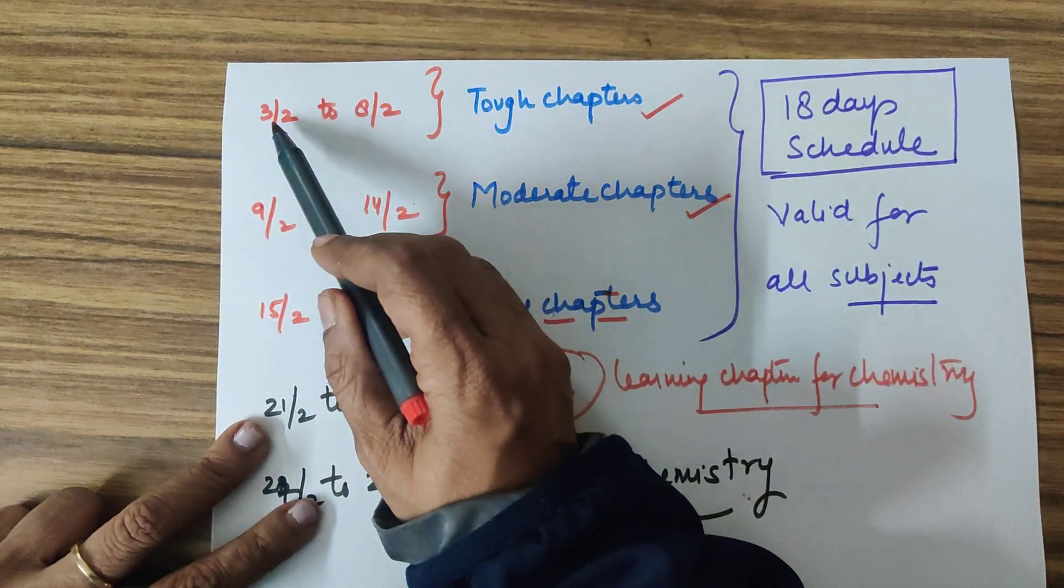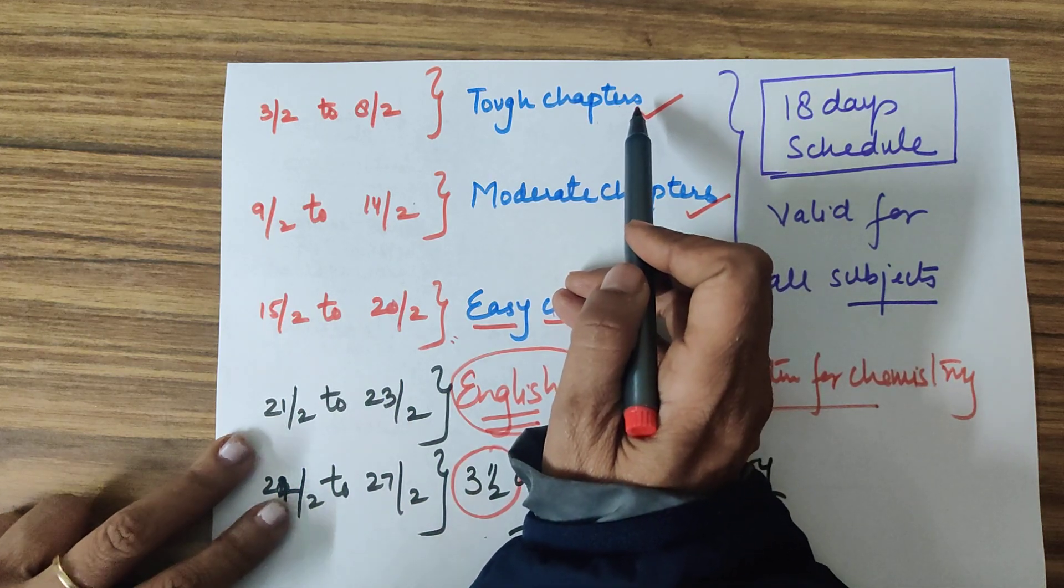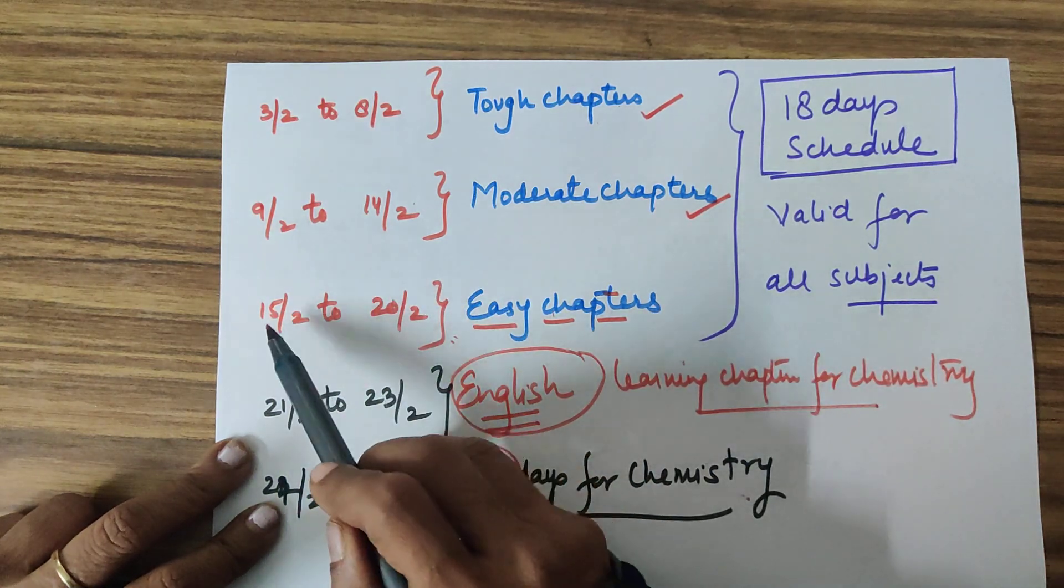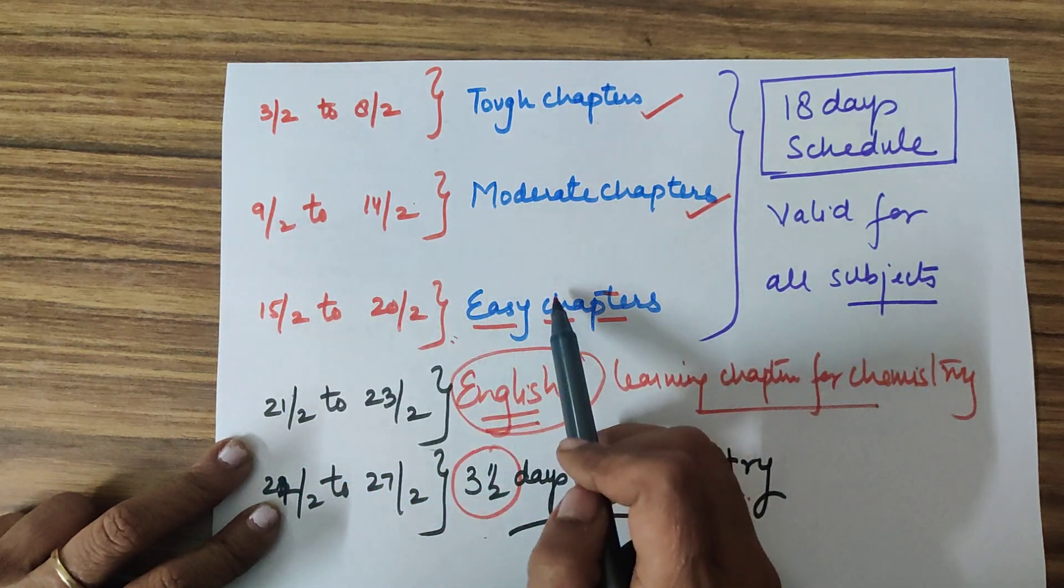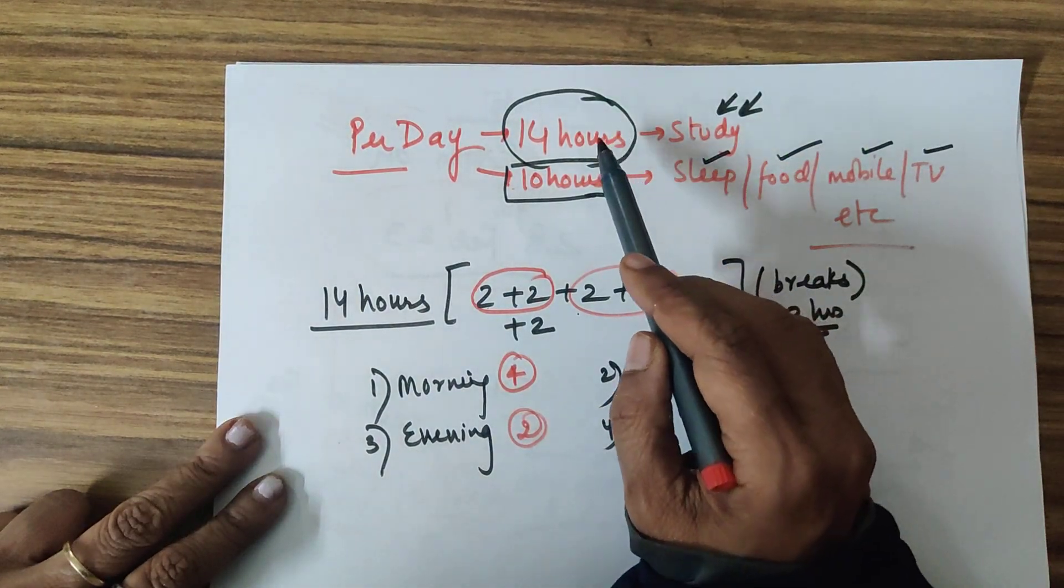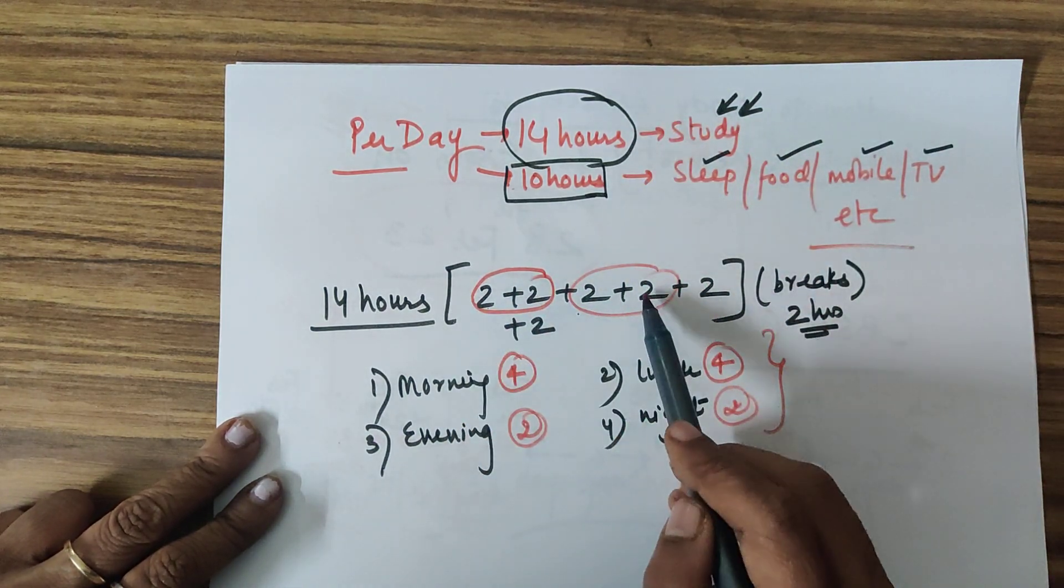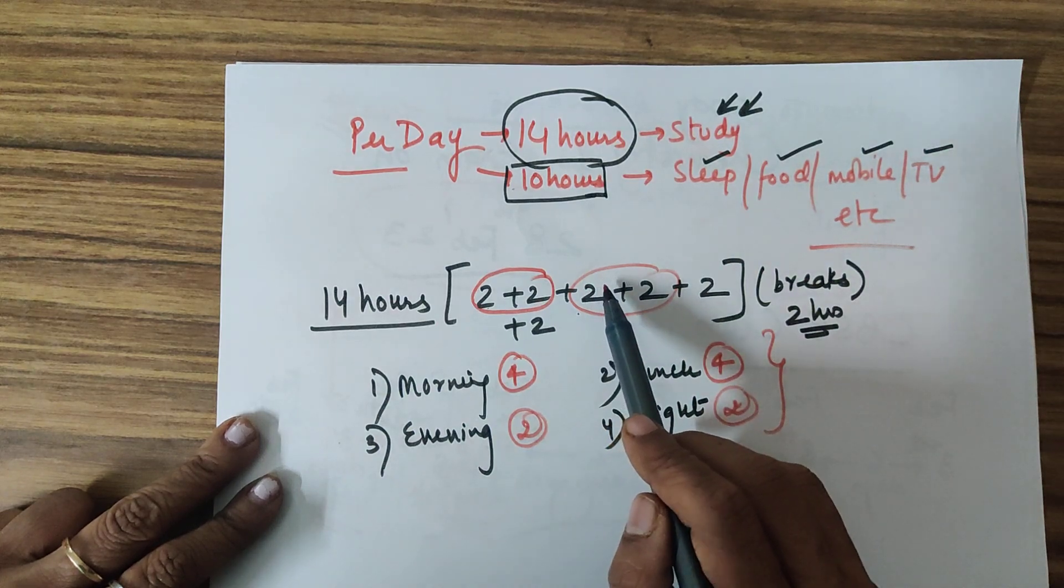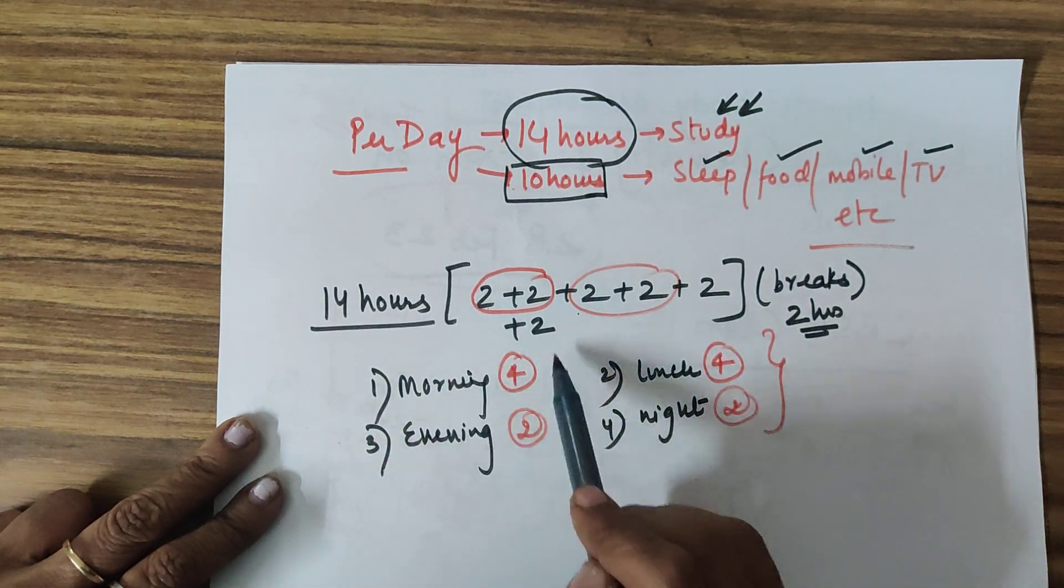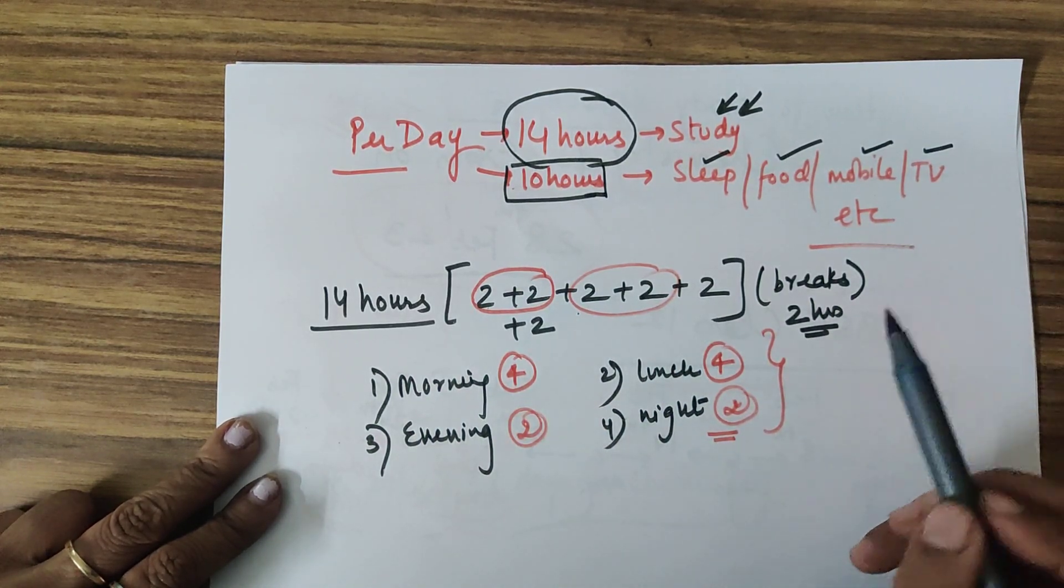I repeat once again. First 6 days, please do your tough chapters of all the subjects. Next 6 days, moderate chapters and easy chapters. Towards 15 to 20th, you will handle easy chapters. Per day basis, my advice is that you have to follow 14 hours of study pattern. Please divide your day into 2 hours slots of studies. Change the subject and work accordingly. From the morning hours, you will need less hours towards the night, and how to decide the tough chapters.